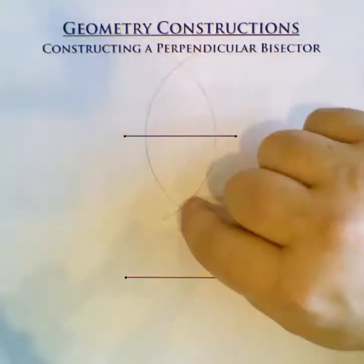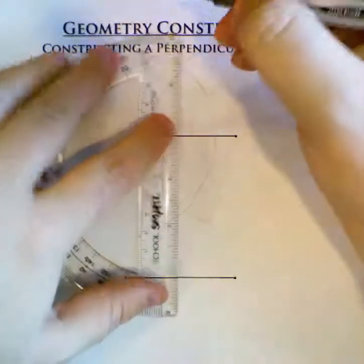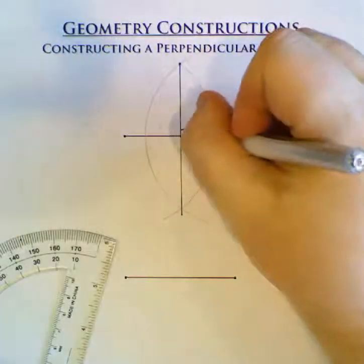By drawing these two large arcs, I have created two points of intersection, and those points of intersection I just mark with my ruler—the perpendicular bisector. It's perpendicular and bisects.